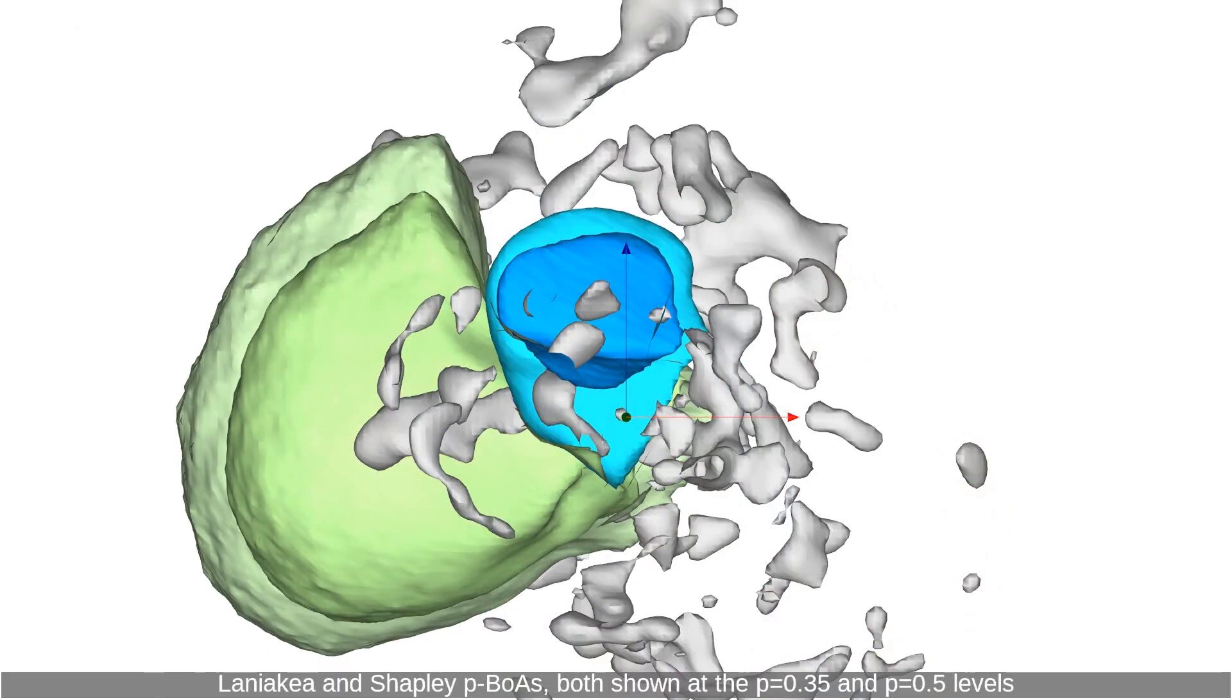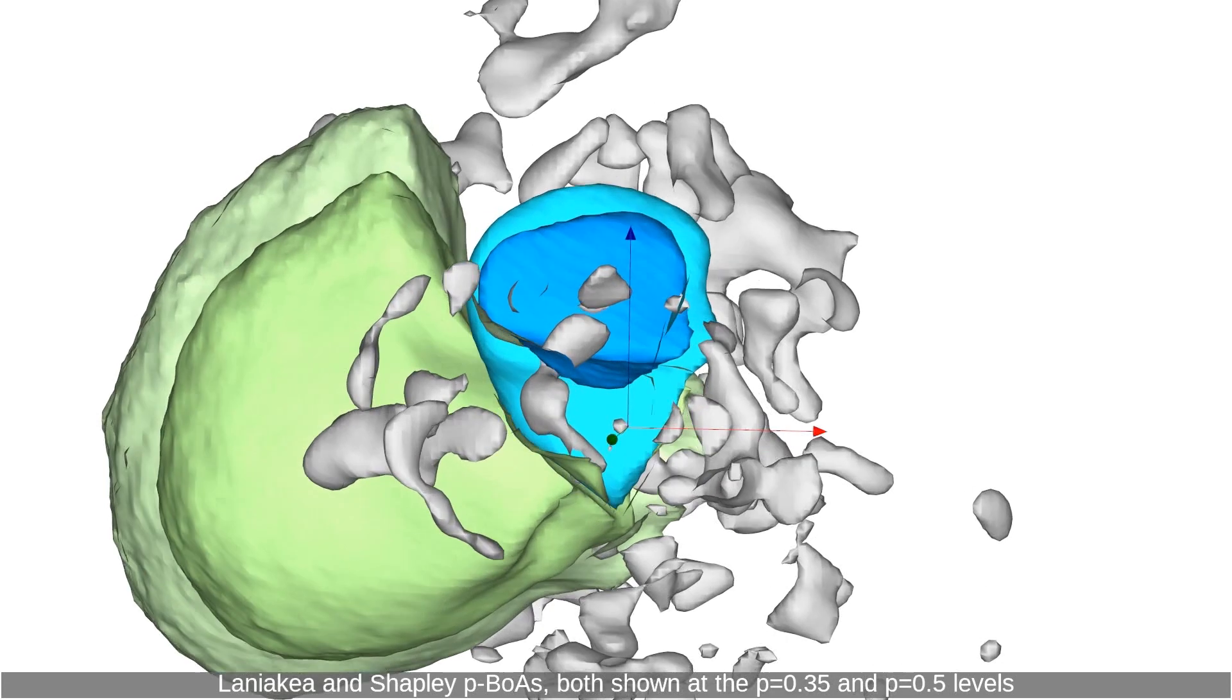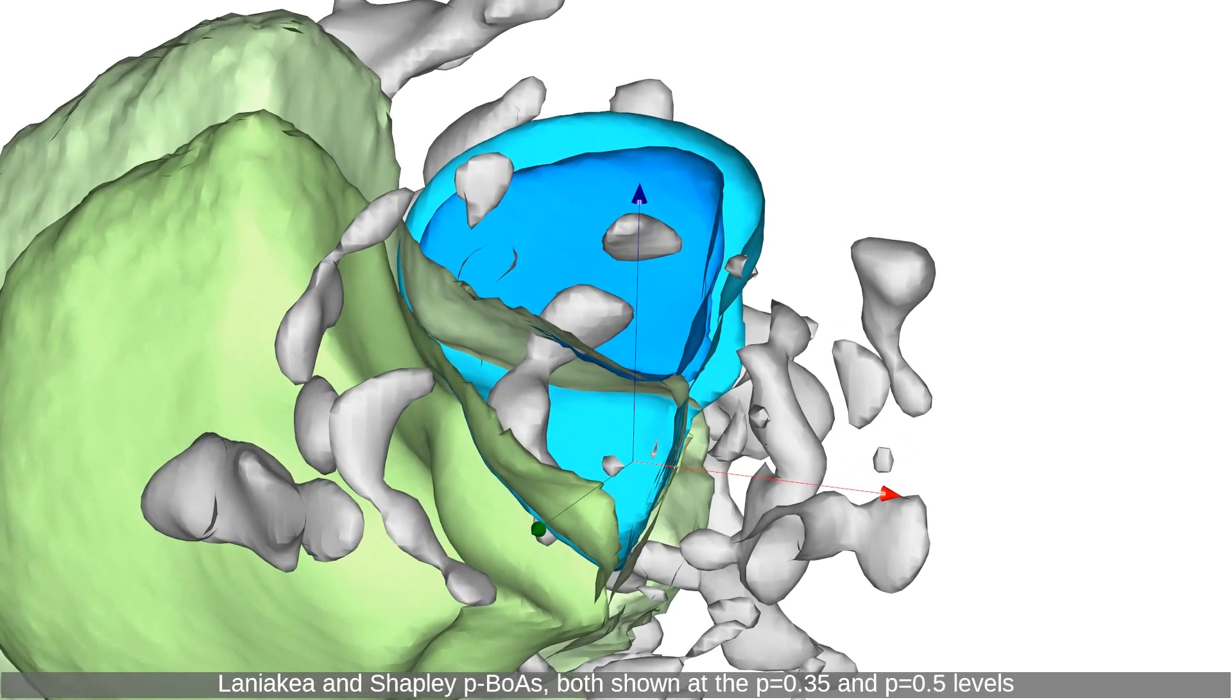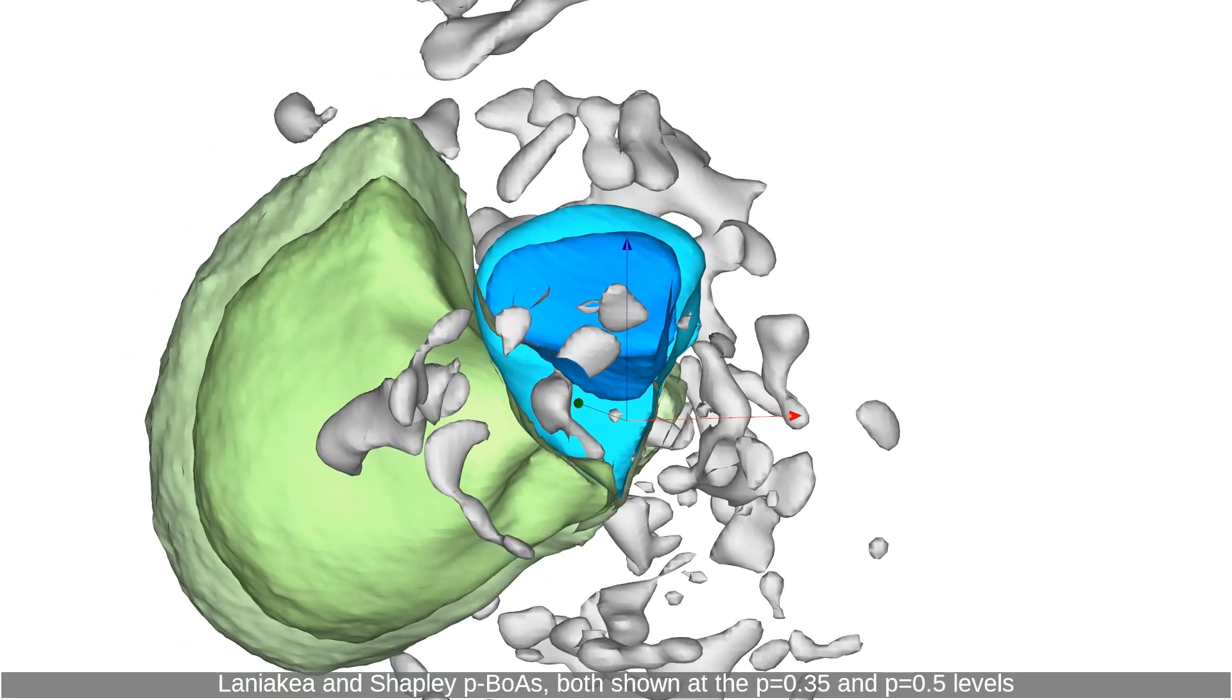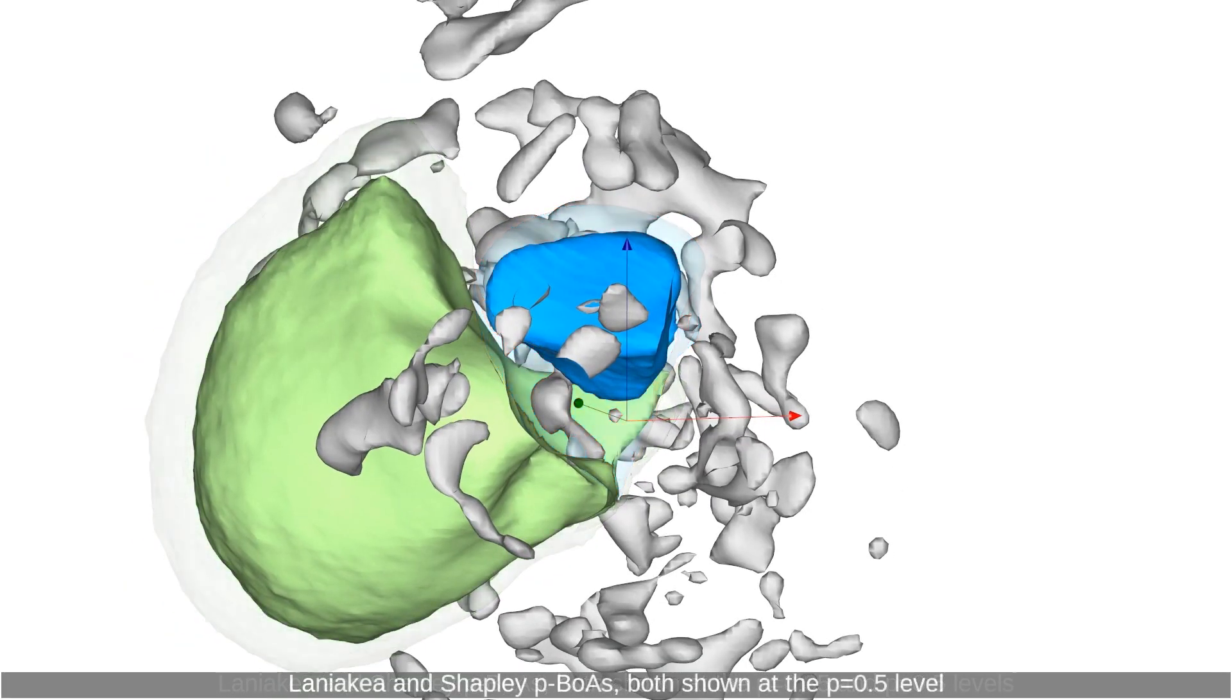Laniakea and Shapley PBOAs both shown at the P equals 0.35 and P equals 0.5 levels.